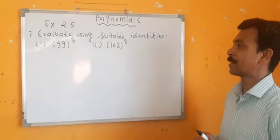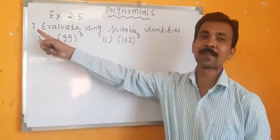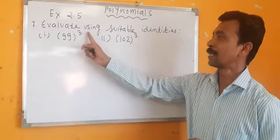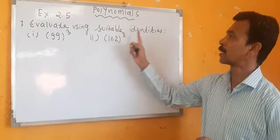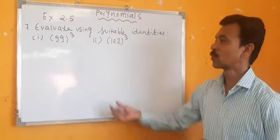Good morning. Today we will see question number 7 of exercise 2.5: evaluate using suitable identities.